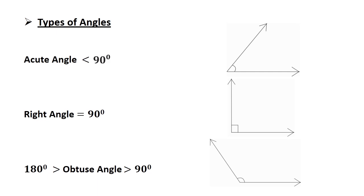Before I start the types of angles given in this chapter, I will discuss the types of angles you have learned in your previous class. An angle whose measure is less than 90 degrees is called an acute angle. An angle whose measure is exactly 90 degrees is called a right angle. An angle whose measure is greater than 90 degrees but less than 180 degrees is known as an obtuse angle. This you have done in your earlier class.